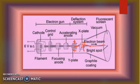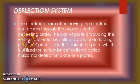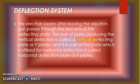The electron beam, after leaving the electron gun, passes through the two sets of deflection plates. One set is the vertical plate providing vertical deflection, and the other is the horizontal plate providing horizontal deflection — these are the X plate and the Y plate.